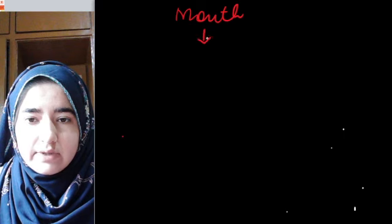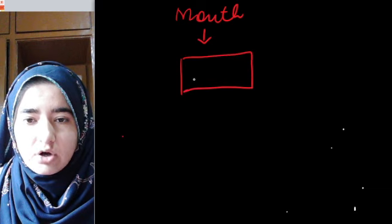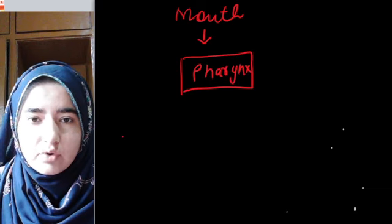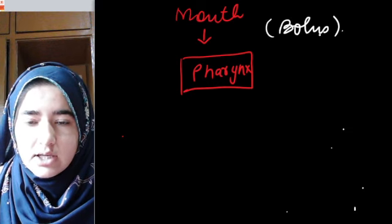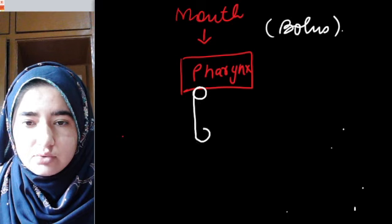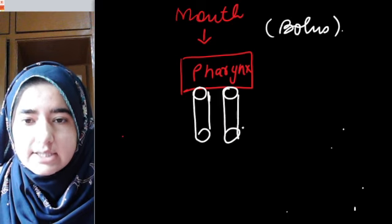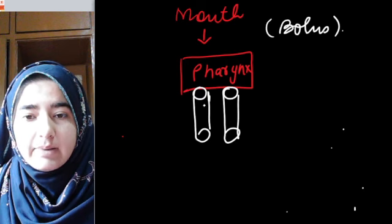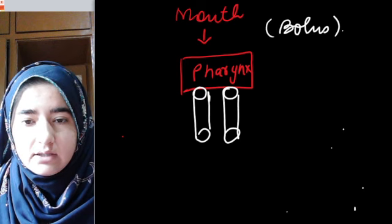After the mouth, food enters the pharynx, which is a common passage for food and air. Food travels in the form of bolus. From the pharynx arise two pipes: the esophagus (food pipe) and the trachea (windpipe).